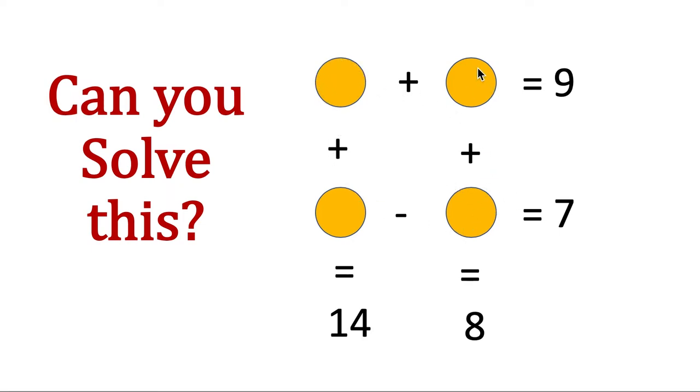So here this number plus this number should become 9, this plus this should become 14, this minus this should become 7, and this plus this should become 8. So let's solve it, and once you have the solution, come back to it.